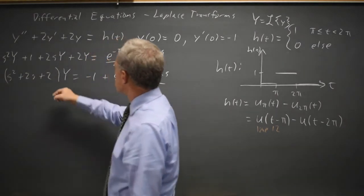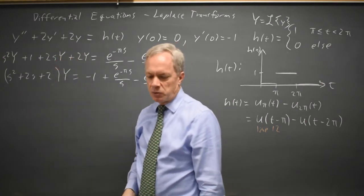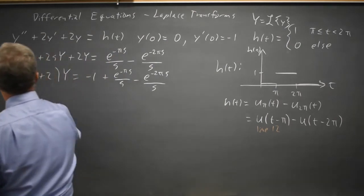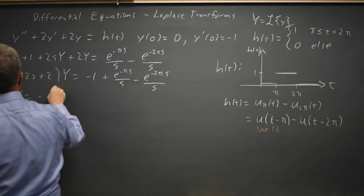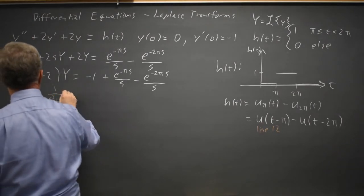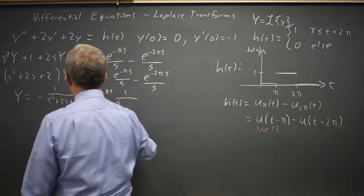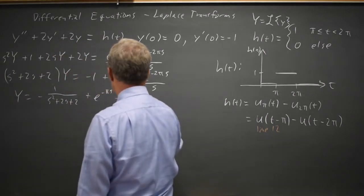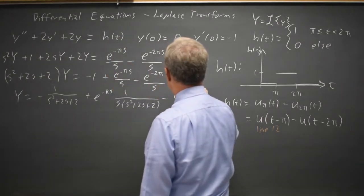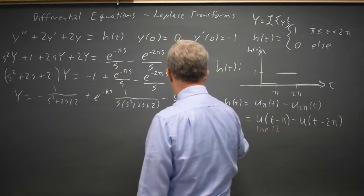I notice the Y coefficient polynomial is the same as my characteristic polynomial, which means I haven't made any major careless errors. Solving for uppercase Y, that is negative 1 over (s squared plus 2s plus 2), plus the e to the negative pi s terms, and then minus e to the negative 2pi s over s(s squared plus 2s plus 2).